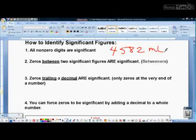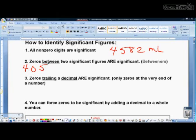And I call them betweeners. Notice it doesn't say zeros between non-zero digits. It says numbers between significant figures. Sometimes you have zeros that are between a non-zero digit and significant zeros, and that makes them betweeners too. They are significant. So, 4, 0, 5, how many significant figures? Three. The zero is significant because it is between two significant figures, the four and the five.